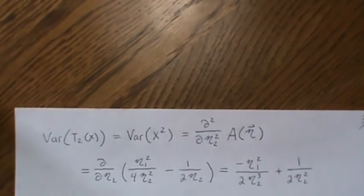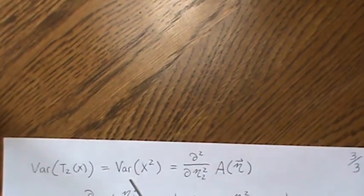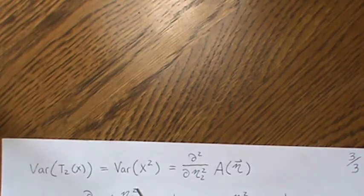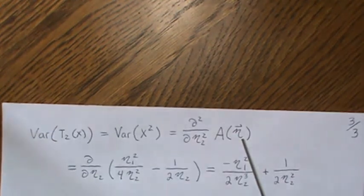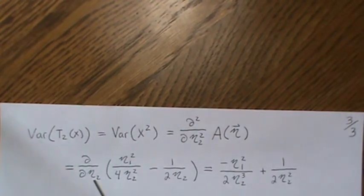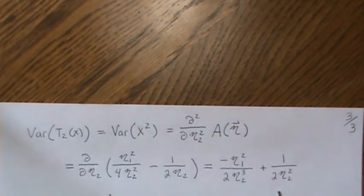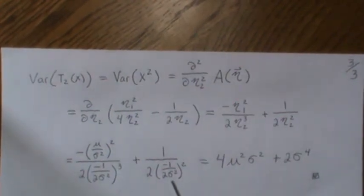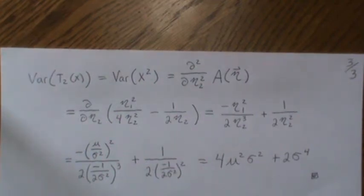Now let's look at the variance of the second sufficient statistic, which in this case is the variance of x squared. It's the second partial with respect to eta 2 of our log partition. We took the derivative once and got this, so let's take the partial again and we get this. We plug in what we know about eta 1 and eta 2, things cancel, and we get this — that's the variance of x squared.